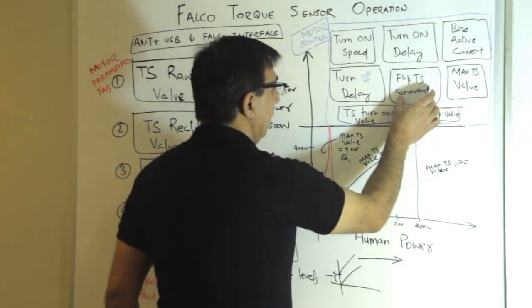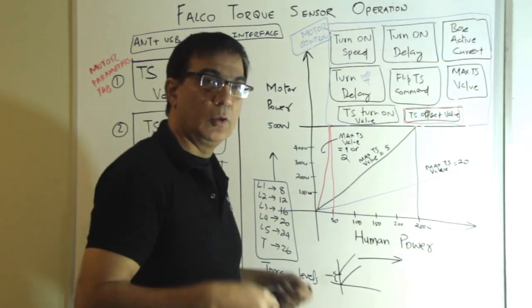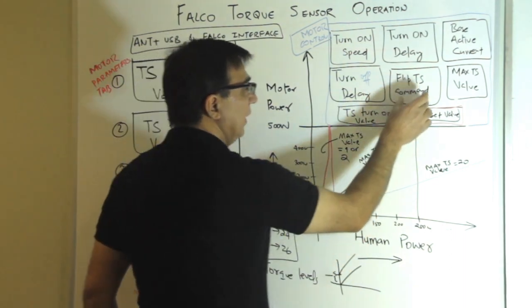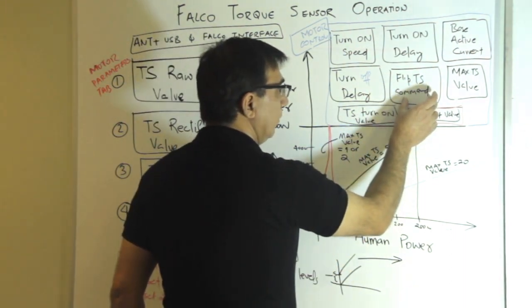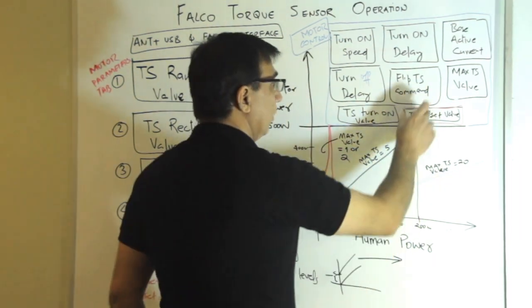Flip torque sensor command. Now this allows you to essentially calibrate the torque sensor in reverse. So this is basically a convenience for cable routing. You can route the cable differently and then recalibrate the torque sensor by using this command.